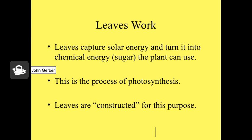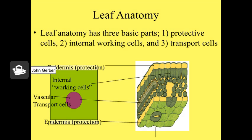The most important function of leaves is to capture solar energy and turn it into chemical energy, or sugar the plant can use, through the process of photosynthesis. Leaves are constructed in a particular way for this purpose. There are three different types of cells in the leaf with different purposes: the epidermal cells, which are protective cells; the internal working cells, which do most of the photosynthesis; and the veins, which are transport cells — the xylem and the phloem.